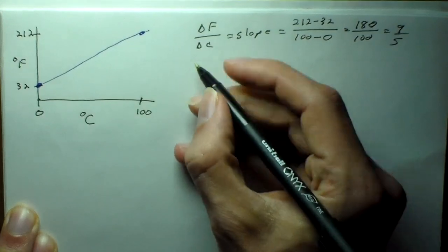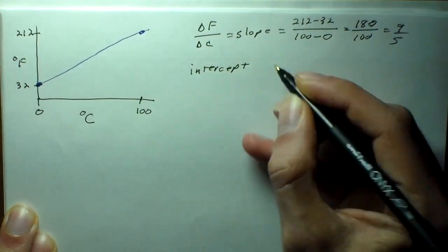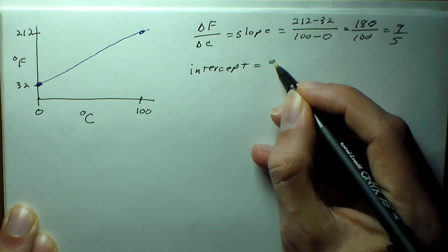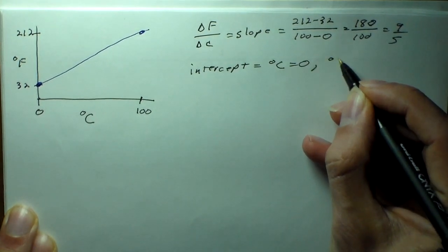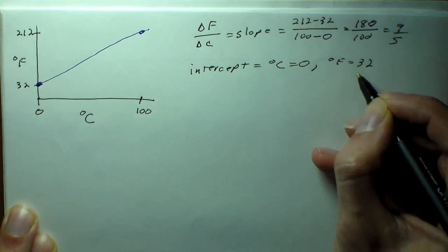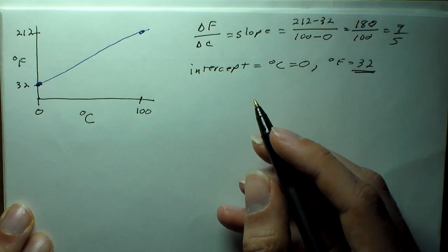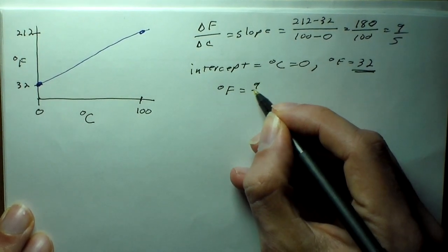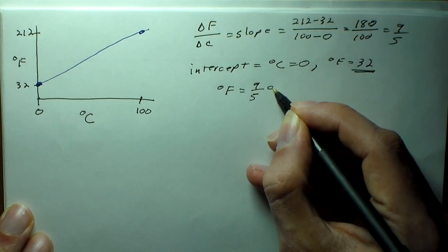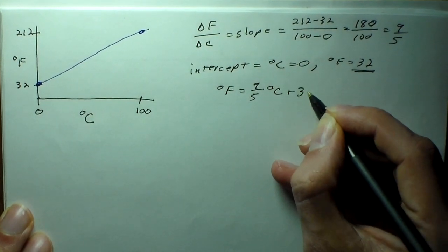The other thing we have to figure out is the intercept. This is when your degree Celsius is equal to 0, which happens when your degree Fahrenheit is equal to 32. So this is going to be our intercept, and we can write down our equation: degrees Fahrenheit equals 9/5 times degree Celsius plus 32.